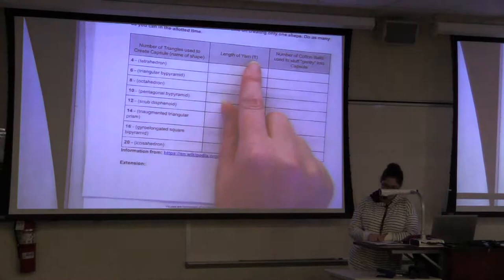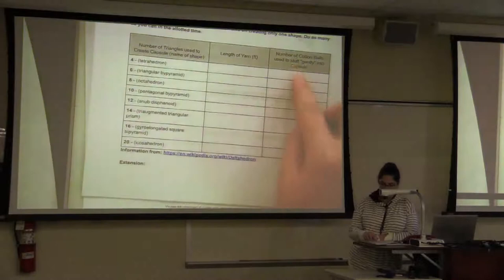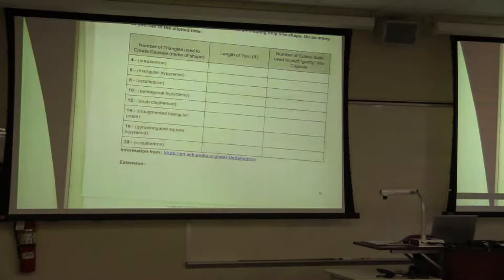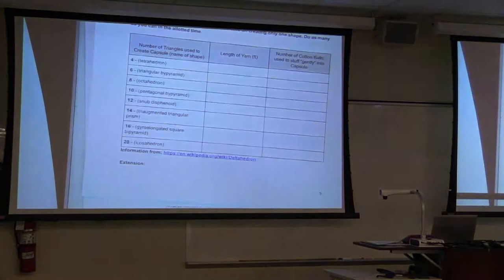So once all the kids have their information filled in here, obviously everybody will have the same length of yarn measured in feet, but not all the kids will have the same information here. You could pull this easily, but over here you might suggest an average of the different groups that had the different shapes, and you could average in the number of cotton balls that they used. So I forgot a pen. Let me see if I've got one over here. I should. I usually have all my stuff out, but I forgot to get out a pen. There we go.